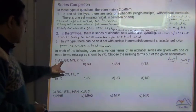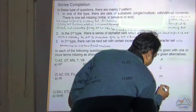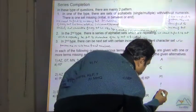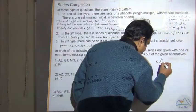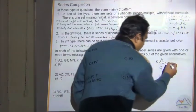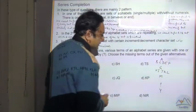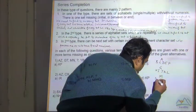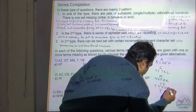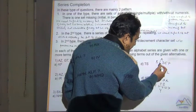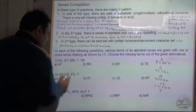Let's look at the relation of the first characters: A, G, M, then missing, then Y. Counting from A: A, B, C, D, E, F, G — that's a jump of 6. G to M is also 6. After M, counting five characters: N, O, P, Q, R, S — we get S. So the first character of the missing set is S.